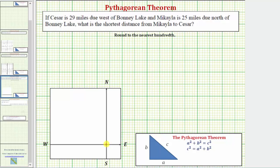Let's assume that the origin, this point here, is the location of Bonnie Lake. So if Caesar is 29 miles west of Bonnie Lake, Caesar would be in this direction, 29 miles. Let's just say here, where this distance is 29 miles.